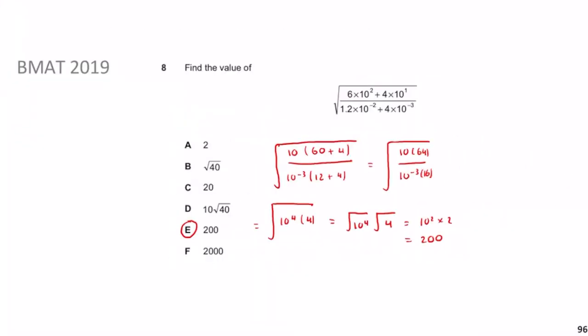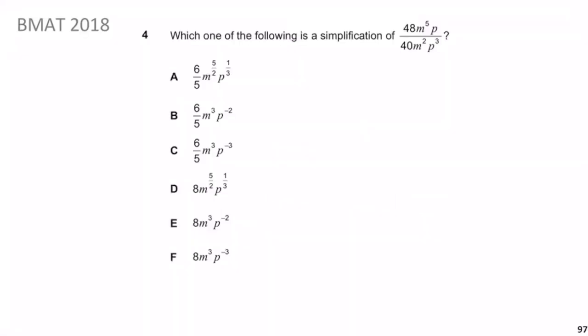Previously we were looking at BMAT 2019 question 8, which had that nasty-looking square root expression. Hopefully we've established it isn't actually that nasty when you break it down into its parts. This type of question comes up quite a lot, so once you have this skill, it will be really easy going forward.